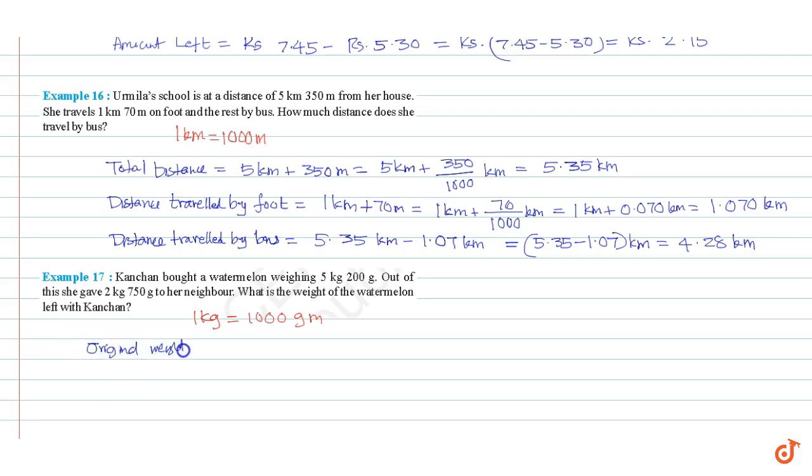Original weight of watermelon is equal to 5 kg plus 200 grams, equal to 5 plus 200 by 1000 kg, equal to 5.2 kg.